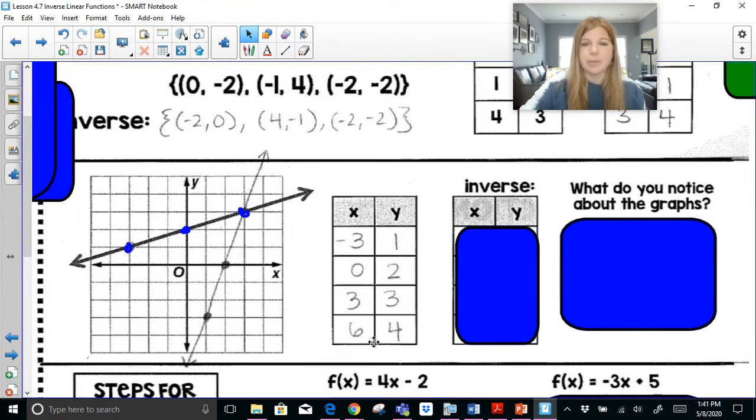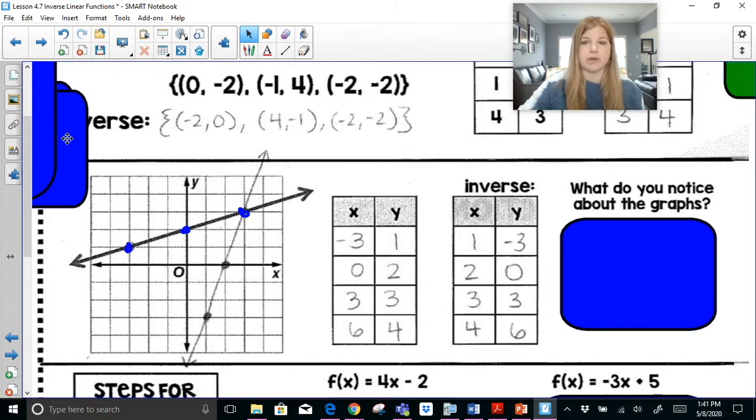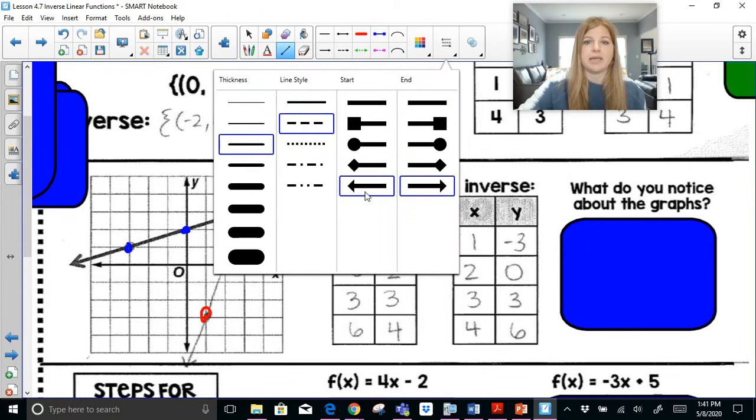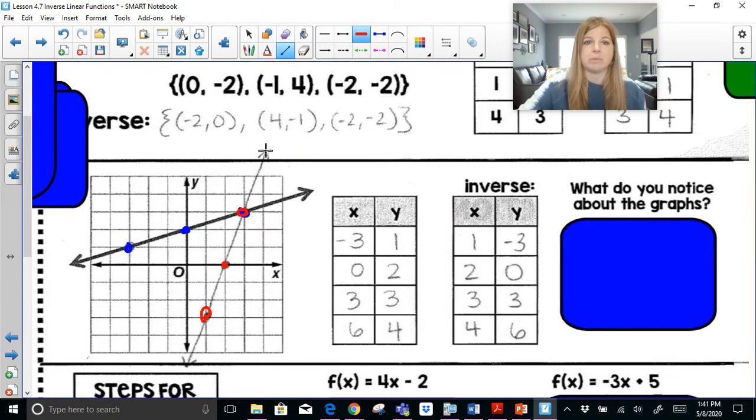I can continue that pattern, of course, and figure out more points. The inverse would simply be to flip the x and y values, and the flipped x and y values are these points here. They share (3, 3), it's the same line, and that's it. That would actually be the graph of my inverse.